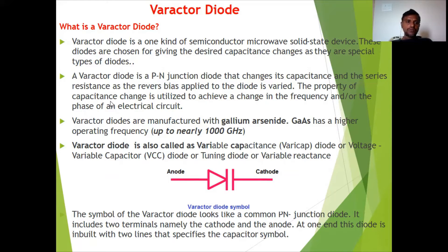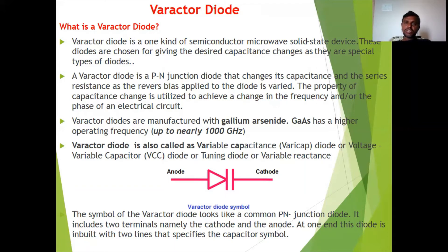This property of capacitance change is utilized to achieve a change in the frequency and/or the phase of an electrical circuit. If you use an LC or tank circuit and want a variable capacitance, you can use a varactor diode — varying the reverse bias voltage automatically changes the capacitance value. Varactor diodes are manufactured with gallium arsenide.